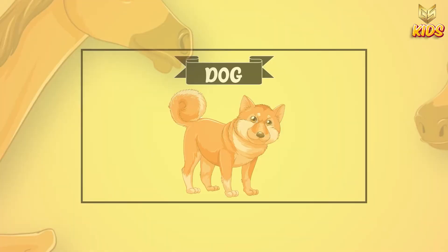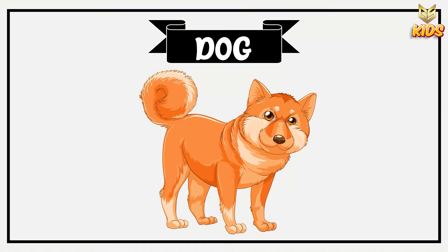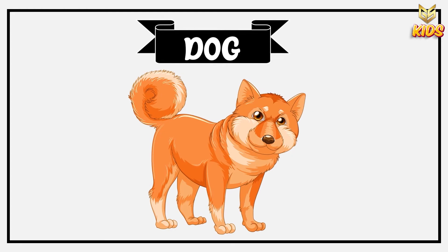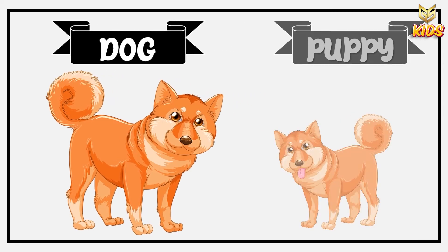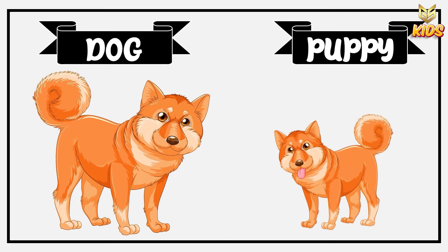The next one is a dog. Do you love dogs? Do you have a dog at your home? Yes, this is a dog and the baby of a dog is called a puppy. What is this? Puppy. Dog, puppy.